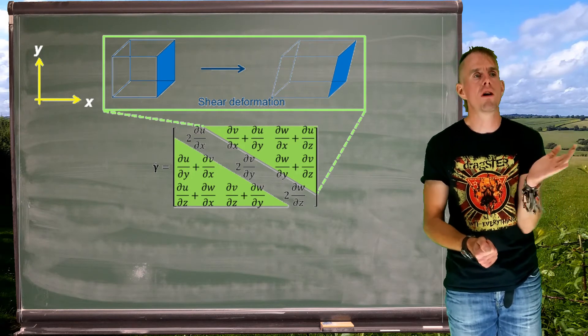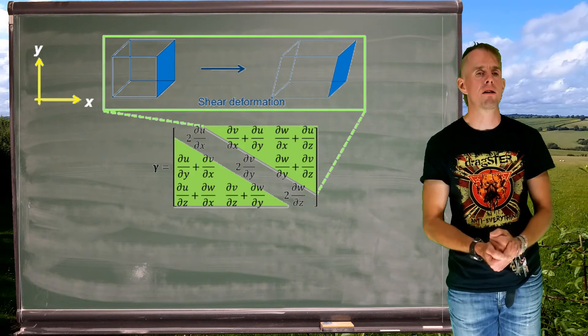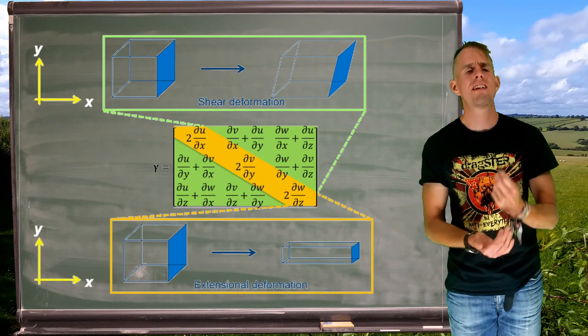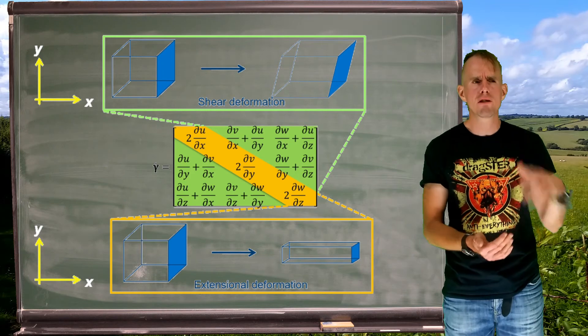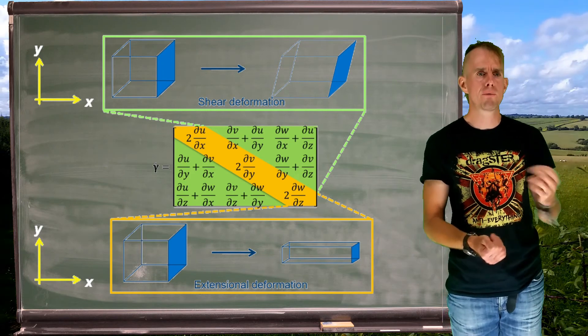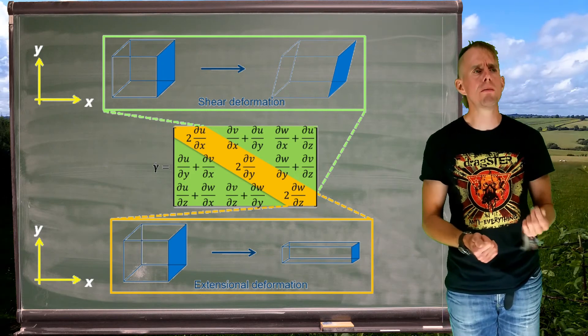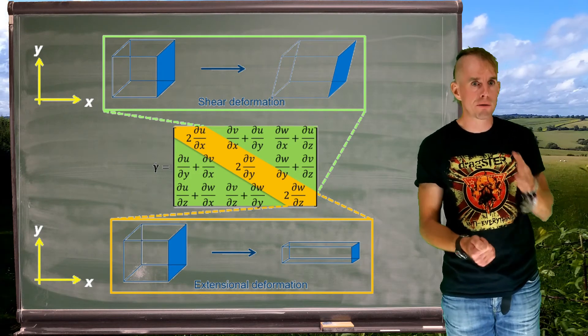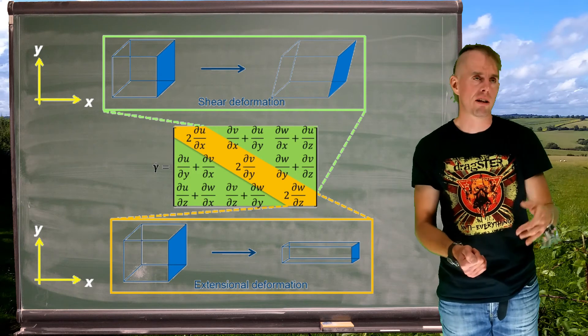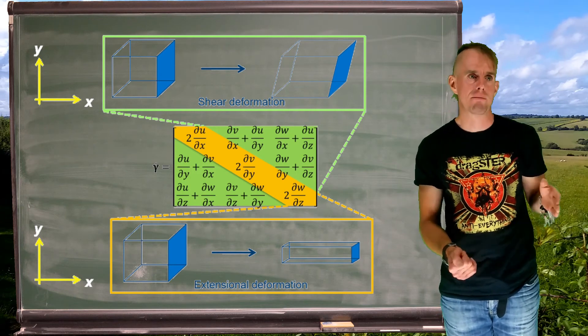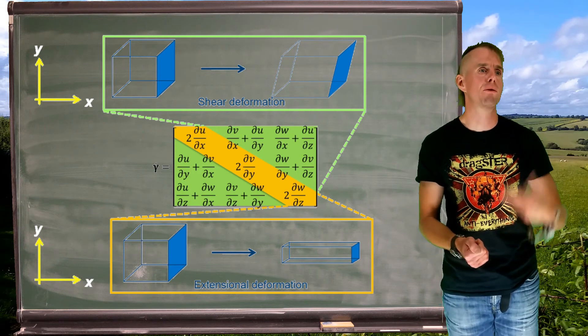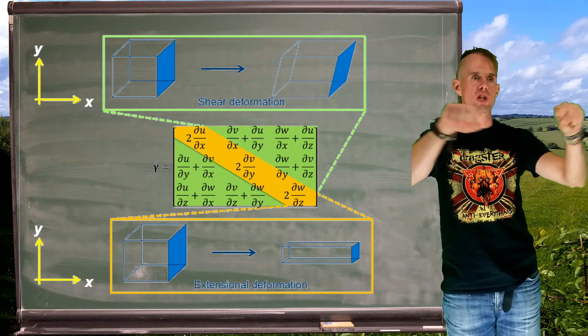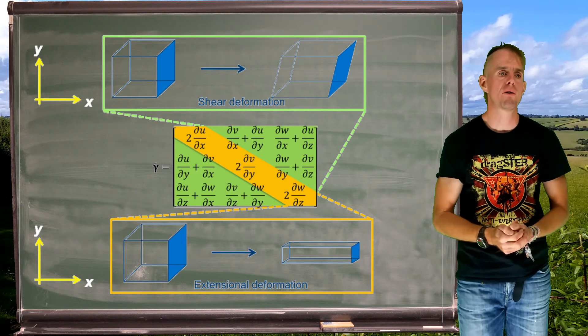So shear deformations are on the upper and lower triangular parts. The principal diagonal, therefore, is what's termed extensional deformation. It gives rise to a normal stress. But if we think about what du by dx is saying, we've got an x-direction velocity changing in the x-direction. So the flow is accelerating, or decelerating, in the x-direction. Same for dv dy, same for dw dz. So it's pulling out something or squashing something.